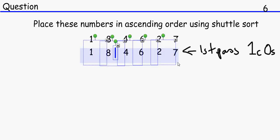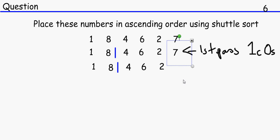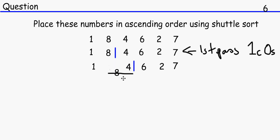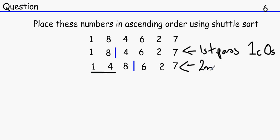For the second pass, we are going to compare the first three numbers. Let's start from the furthest right. Eight and four — that's not in ascending order, so we swap them. Since this is a new number in the second row, we compare one and four as well. One and four are in ascending order. So that is the second pass: two comparisons and one swap.